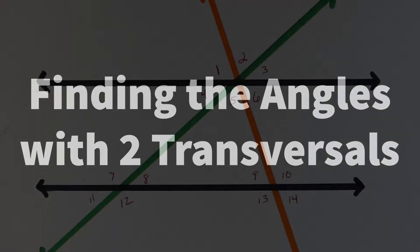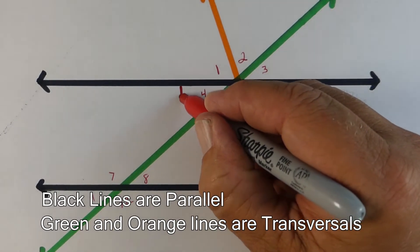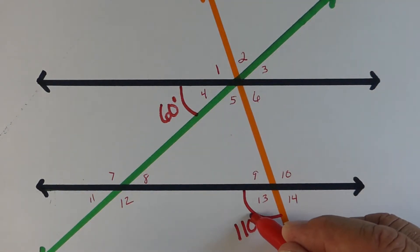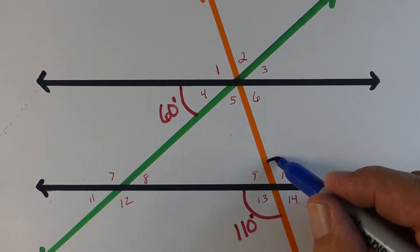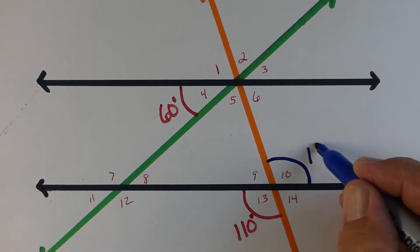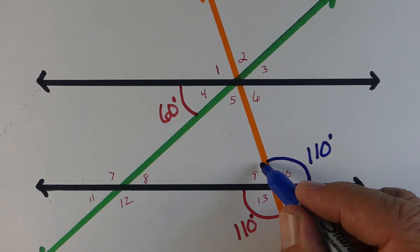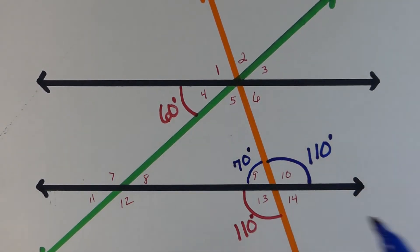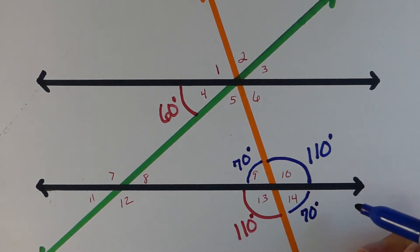Now we're going to make it a little more challenging — we have two transversals with our two parallel lines. We're going to assume we know two of the angles: angle four is 60 degrees and angle 13 is 110 degrees. Angle 10 and 13 are both vertical angles, so we can do that one pretty easily. Angle 9 and 10 together are adjacent angles, so 180 minus 110 is 70. Angle 9 and 14 are vertical angles, so angle 14 must be 70 degrees.